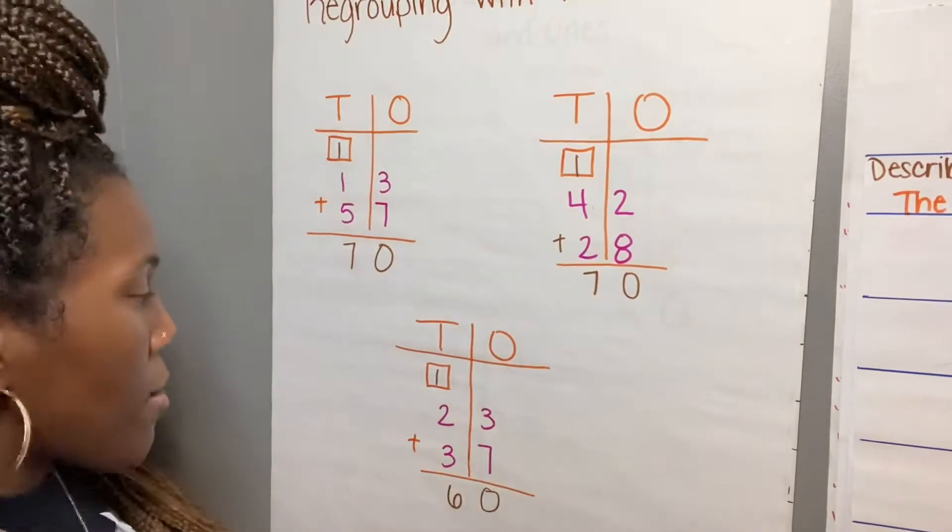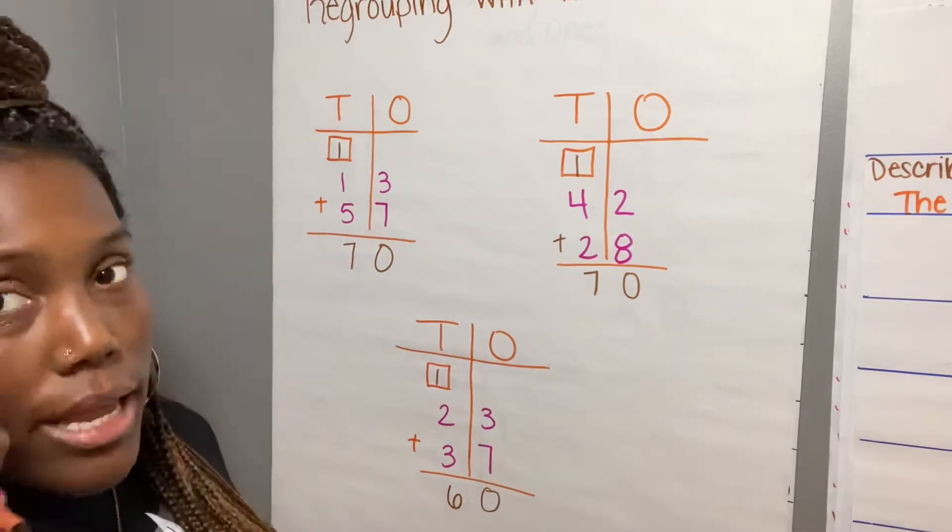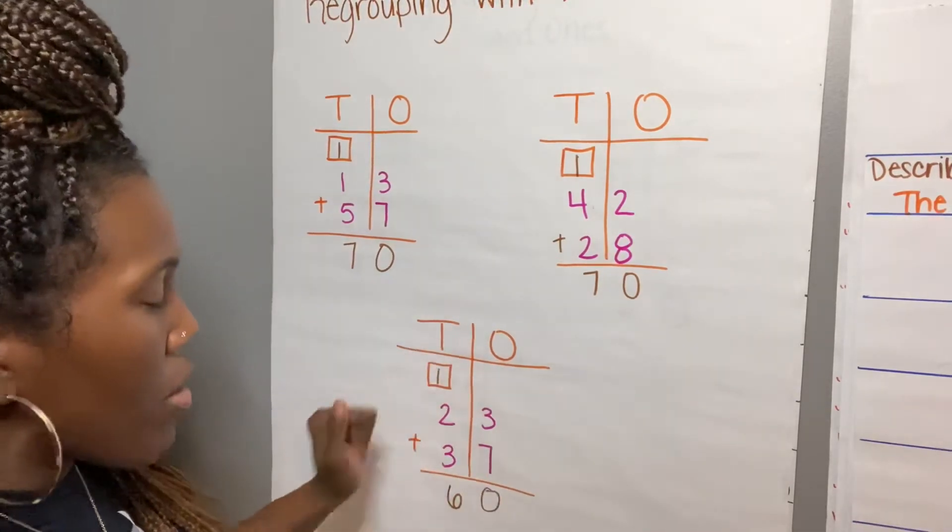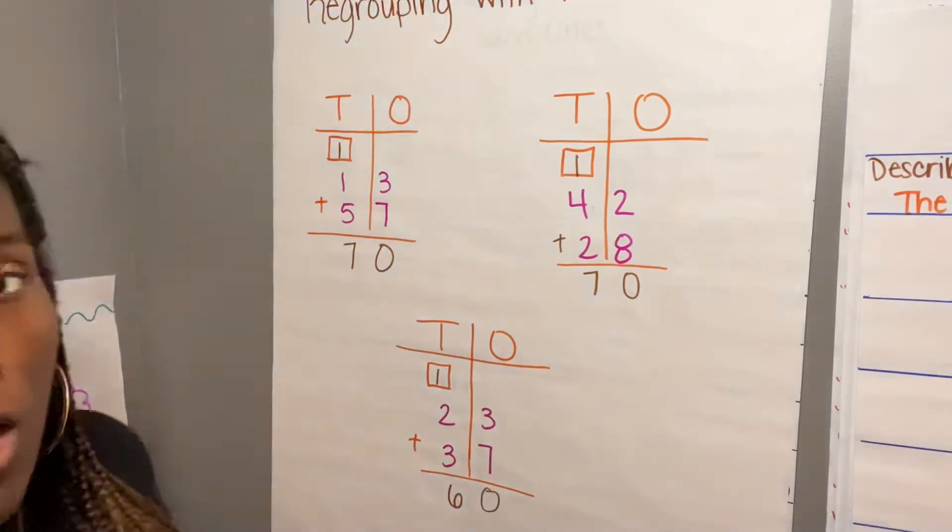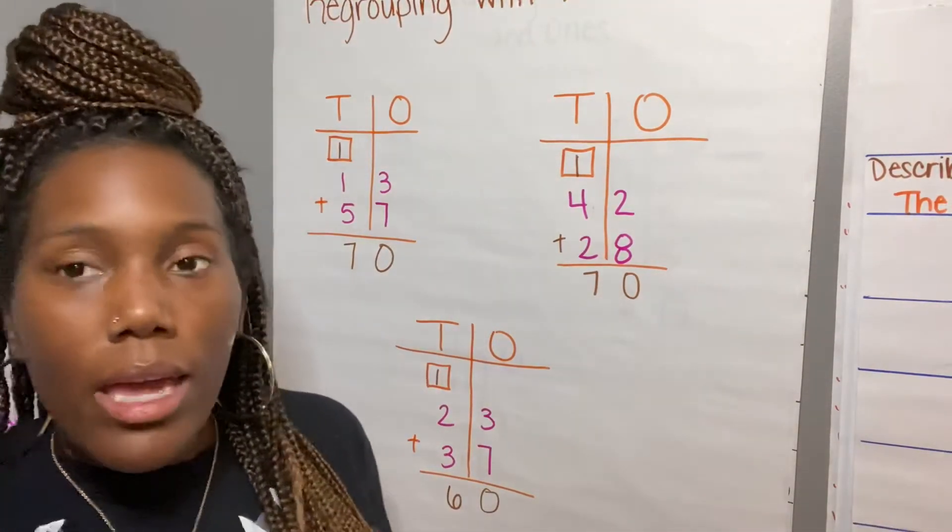And I can check my work with that: 3 plus 7 is 10, put my 0 there, carry my 1 over. And then I know 1 plus 2 is 3, 3 plus 3 is 6. If I need to work it out that way, I can as well.